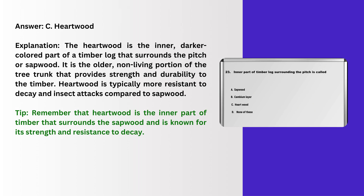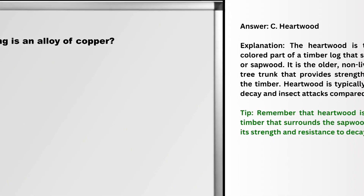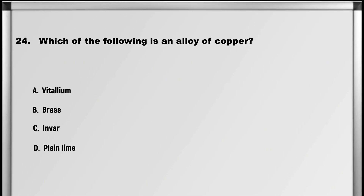Explanation: The heartwood is the inner, darker colored part of a timber log that surrounds the pith or sapwood. It is the older, non-living portion of the tree trunk that provides strength and durability to the timber. Heartwood is typically more resistant to decay and insect attacks compared to sapwood. Tip: heartwood is the inner part of timber that surrounds the sapwood and is known for its strength and resistance to decay.